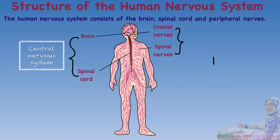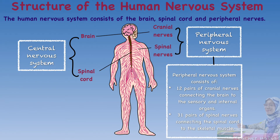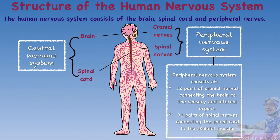Next is the structure of the human nervous system. The human nervous system consists of the brain, spinal cord, and peripheral nerves. The brain and spinal cord work together in the central nervous system, while cranial nerves and spinal nerves work together in the peripheral nervous system. There are 12 pairs of cranial nerves connecting the brain to the sensory and internal organs, and 31 pairs of spinal nerves connecting the spinal cord to the skeletal muscles.